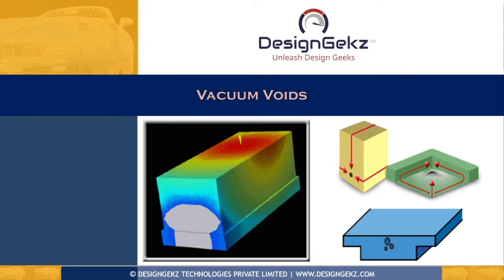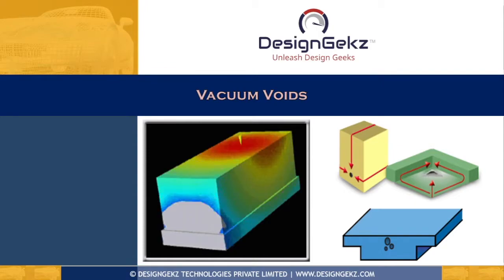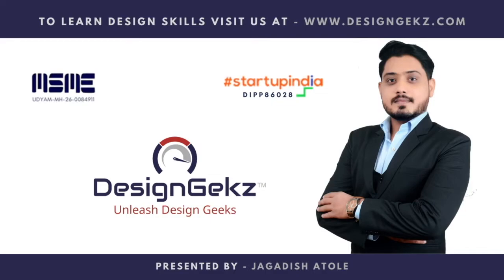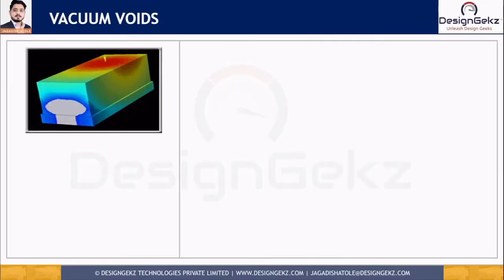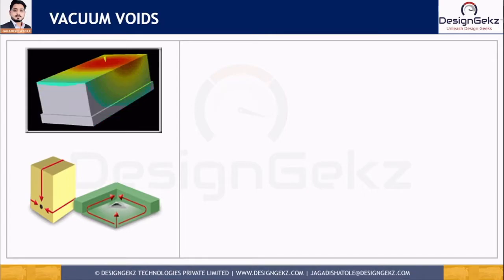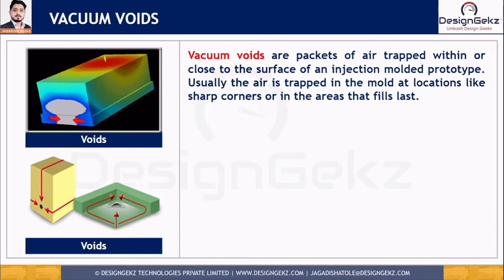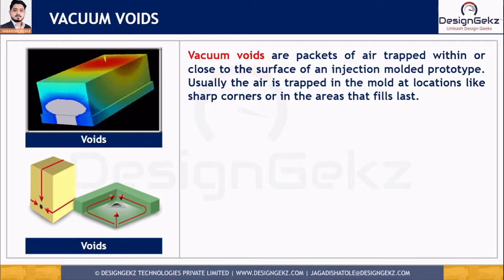My name is Jagdish Atore and in this video we will discuss the vacuum void defect. What are these open pores on the part? These are vacuum voids. The vacuum voids are packets of air trapped within or close to the surface of an injection-molded part. The trapped air is air which fails to escape from the mold vent. Usually, the air is trapped in the mold at locations like sharp corners or in areas that fill last — as shown in this first image, where the area filling last has trapped air leading to air traps or vacuum voids.